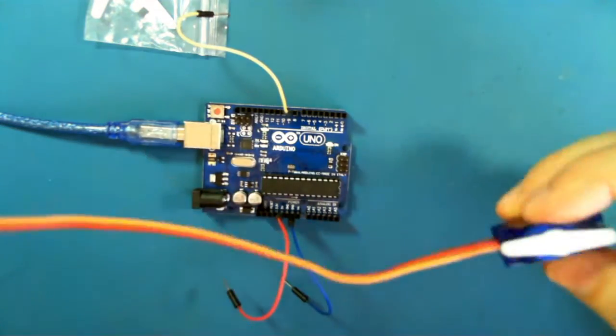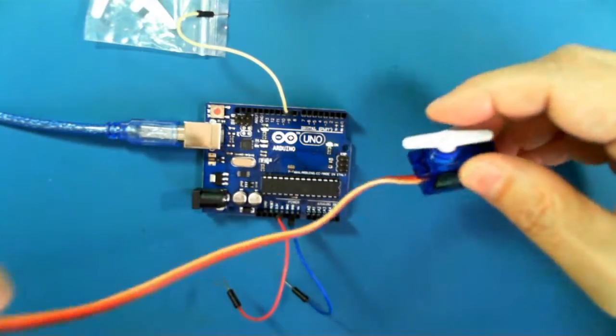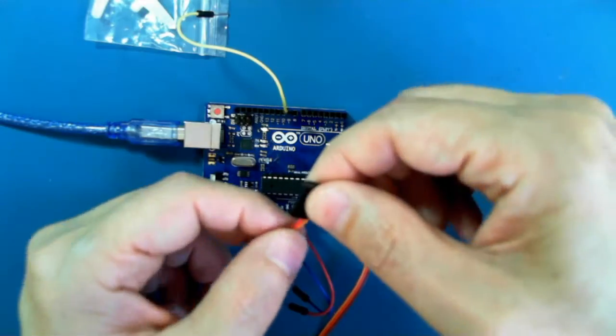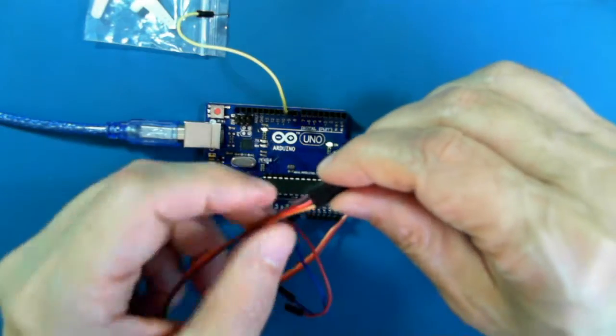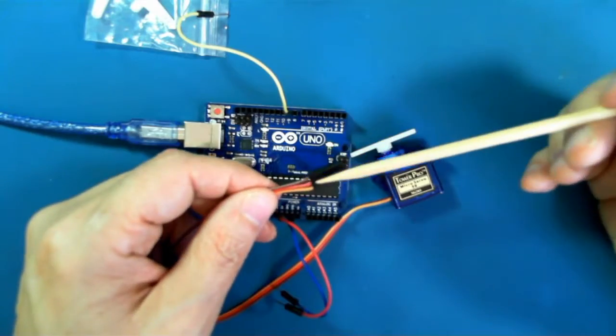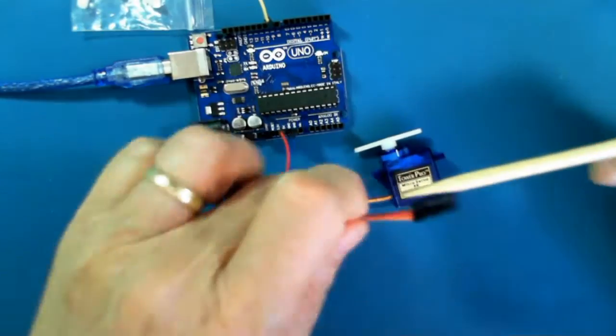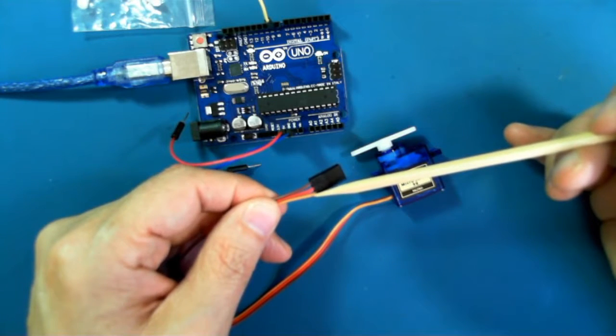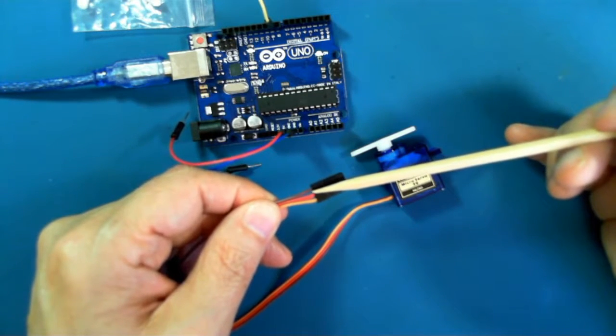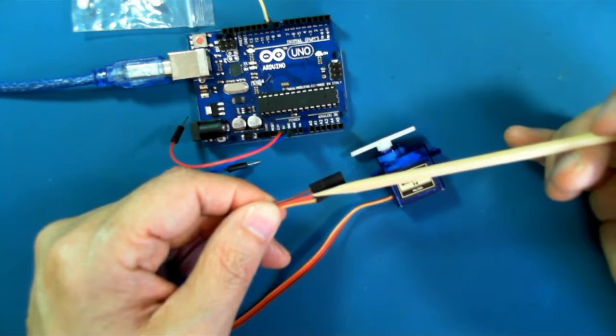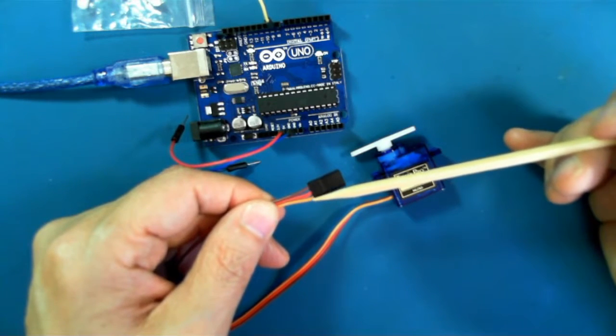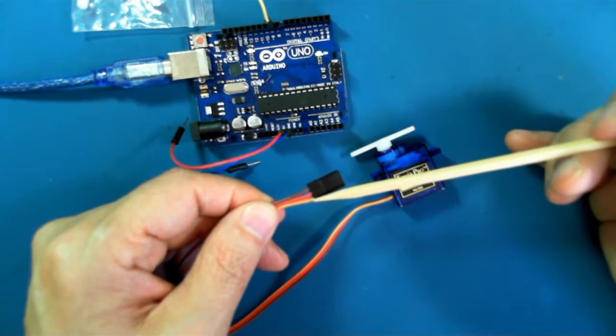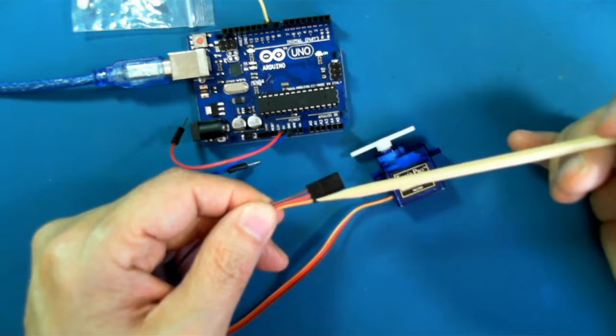The way this is connected up is the wires that go to the servo is usually a brown one, a red one, and a yellow or orange one. The brown one is ground, the red one is 5 volts, and the orange or yellow or white one, in this case it's orange, this one is the signal.